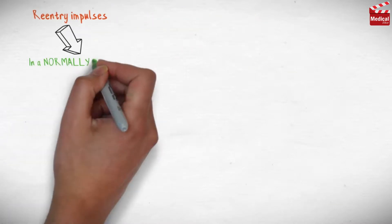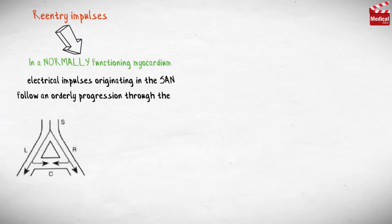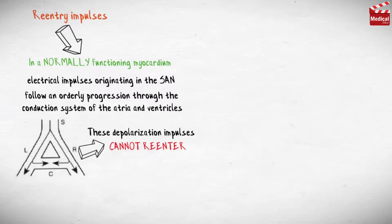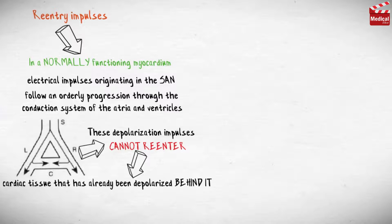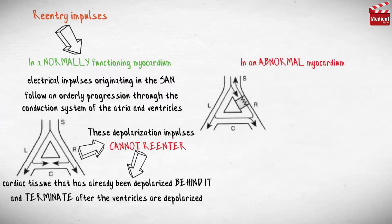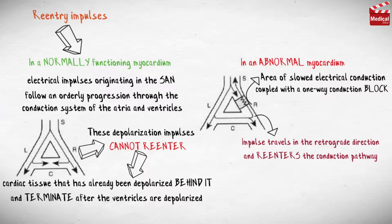In a normally functioning myocardium, electrical impulses originating in the SAN follow an orderly progression through the conduction system of the atria and ventricles. These depolarization impulses cannot reenter cardiac tissue that has already been depolarized, and terminate after the ventricles are depolarized. In an abnormal myocardium, conditions might exist where there is an area of slowed electrical conduction coupled with a one-way conduction block. Because of the slow rate of depolarization and the one-way conduction block, the impulse travels in the retrograde direction and reenters the conduction pathway, causing an extra or irregular heartbeat.